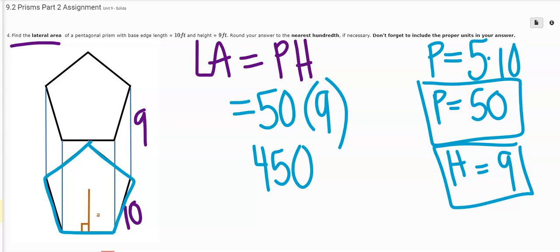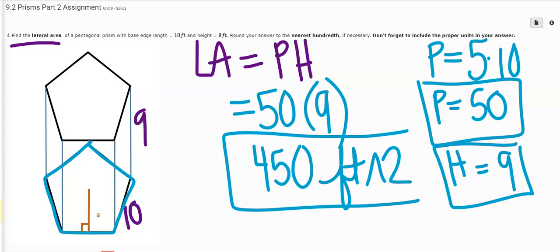It is area, so the units will be squared. So feet to the second power. You can use that carrot button to enter it, or you can use the pencil button in the equation editor. Hope this has helped you find the lateral area.